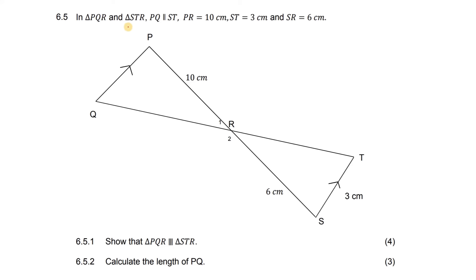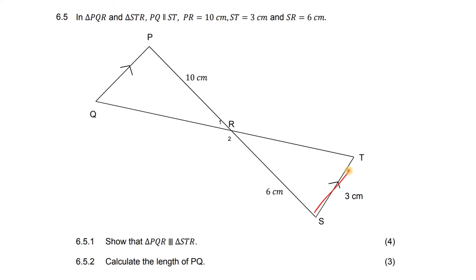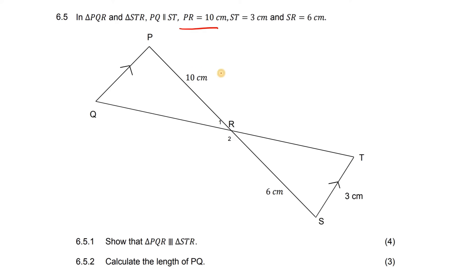In triangle PQR, which is that one, and triangle STR, which is that one. PR is 10, ST is 3, and SR is 6. They've given us that. Then it says, for four marks, show that this.